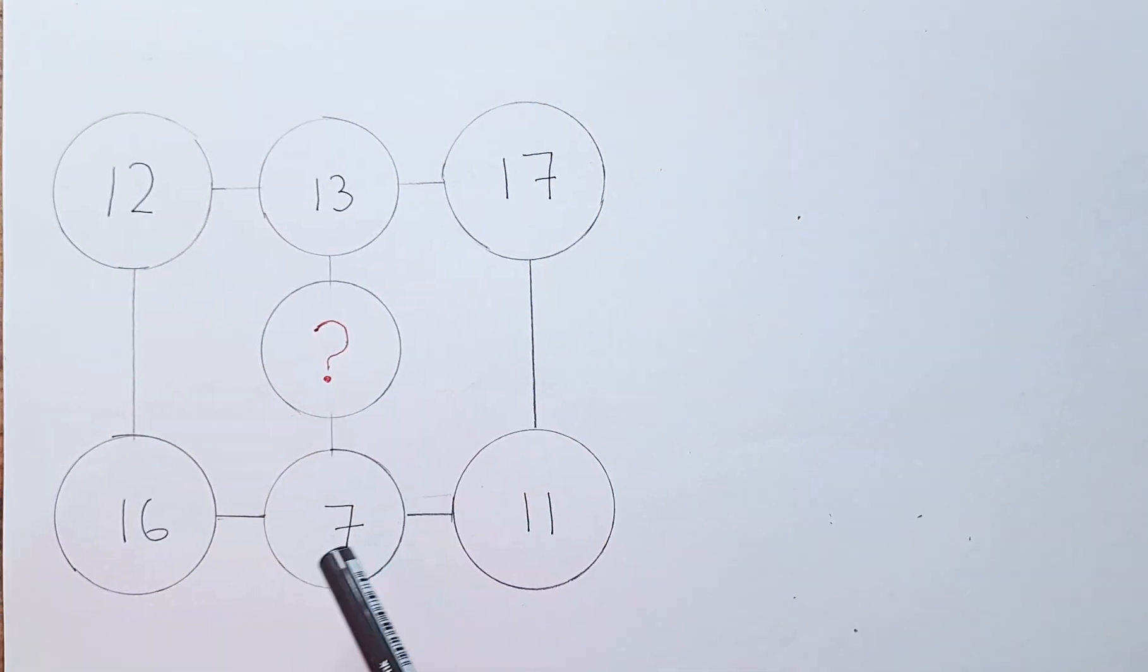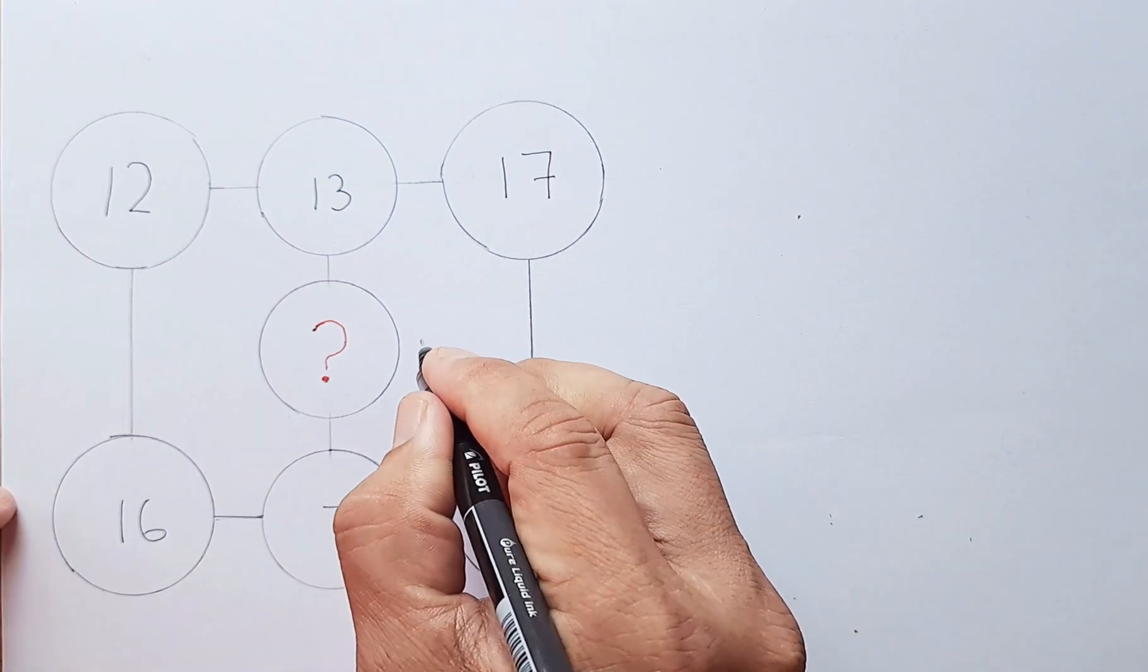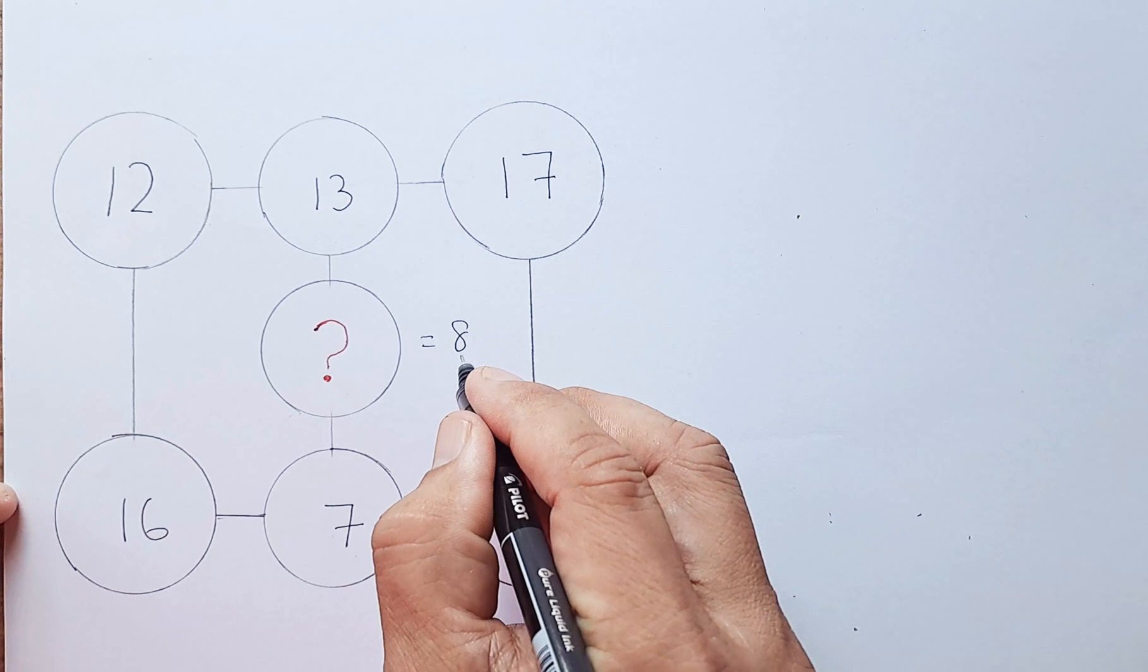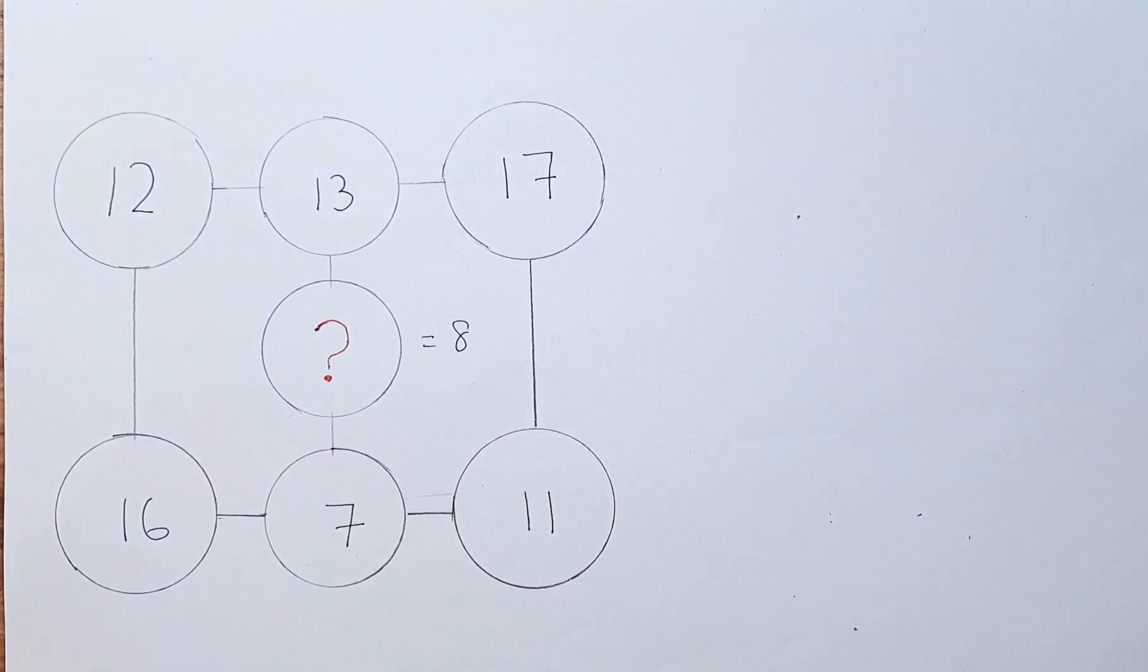13 plus 7 is 20. So the question mark has to be 8 because 13 plus 8 is 21, and 21 plus 7 gives you 28. So it's reasonable to assume that the question mark is 8.